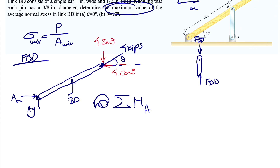We can use the 2D shortcut for finding moments in two-dimensional questions — I have a video on that in my engineering mechanics channel, link in the description. Basically we need the force and the perpendicular distance from the point to the line of action. For F_BD, it makes a counterclockwise moment about point A, so it's positive. The distance from A is 12 times cosine of 30 degrees.